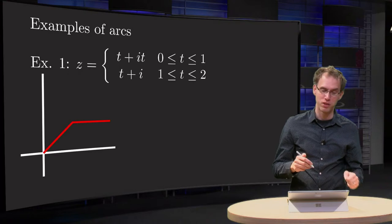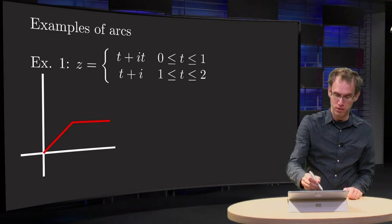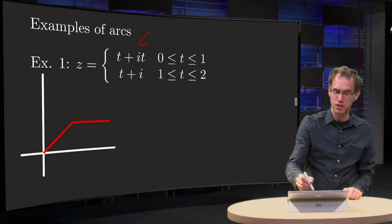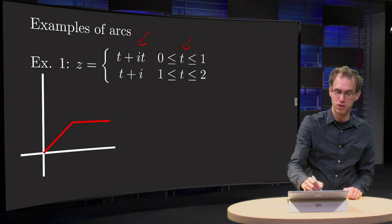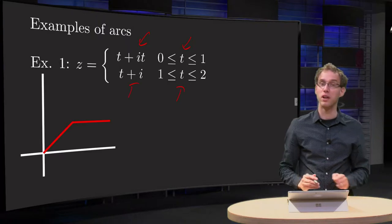Let's do some examples. Let's start with this one: z equals t plus i times t, if t is between 0 and 1, and t plus i if t is between 1 and 2.